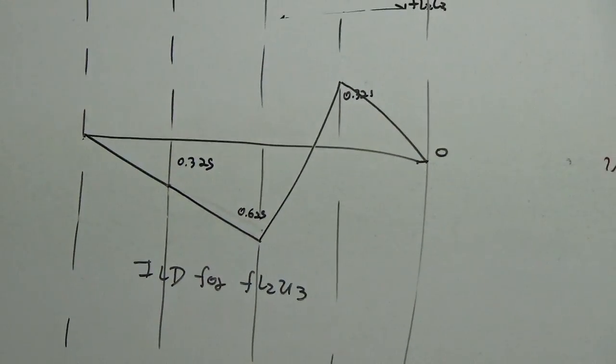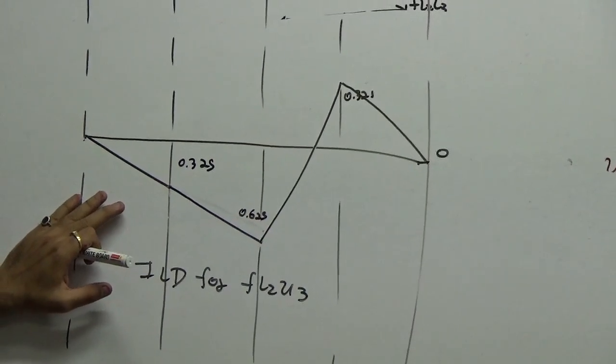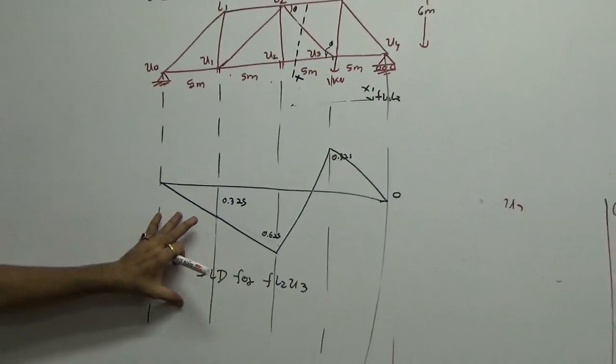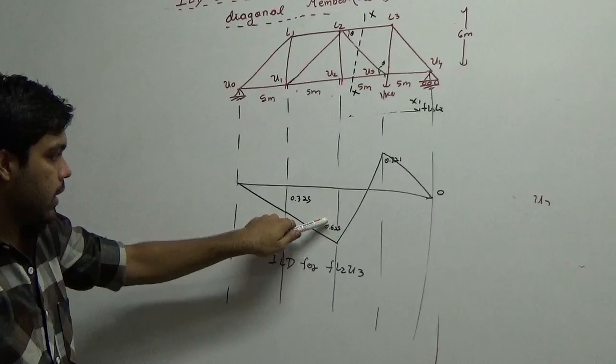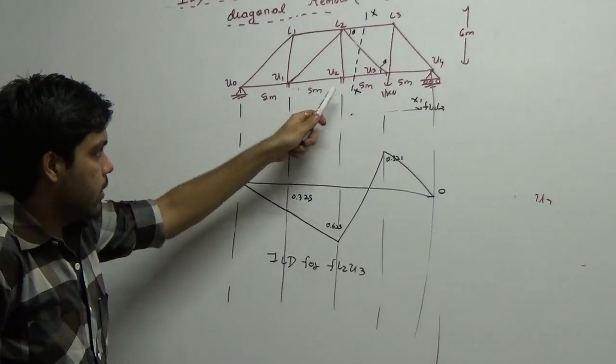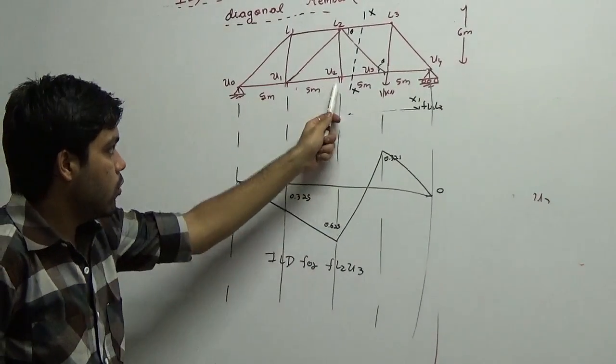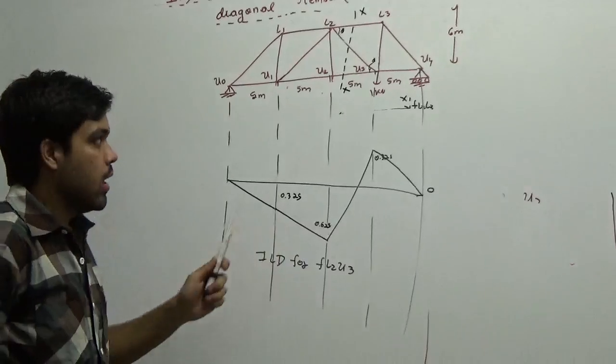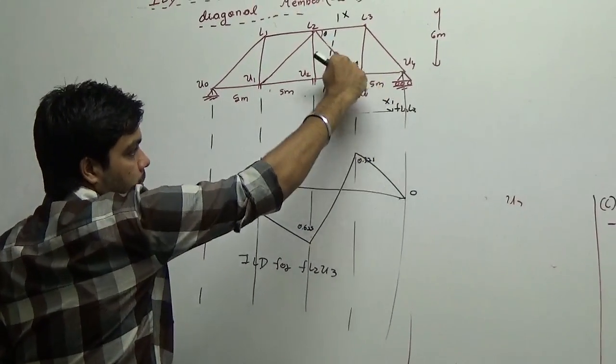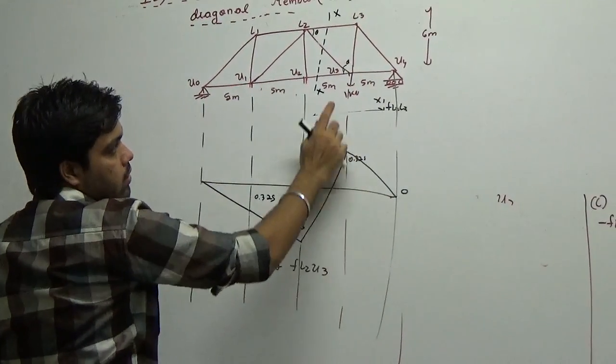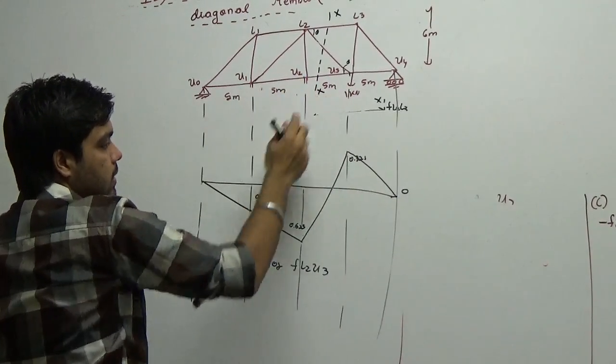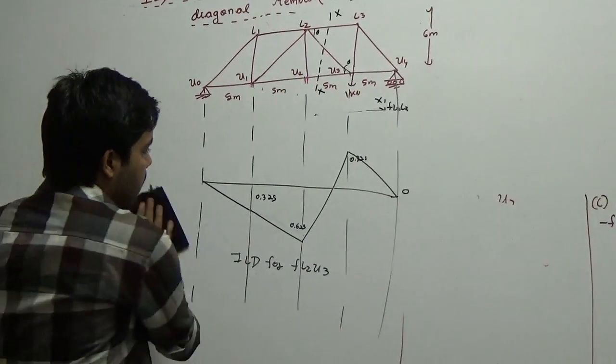Now, in this itself, I hope you understood this thing. I will just say one more thing that the diagonal member means, when the load is here and here, it remains in compression. When the load moves to this location, it becomes tension. Imagine when the load is acting here, it tries to pull the member. That's why this member becomes in tension. Whereas, when the load is here, it remains in compression.